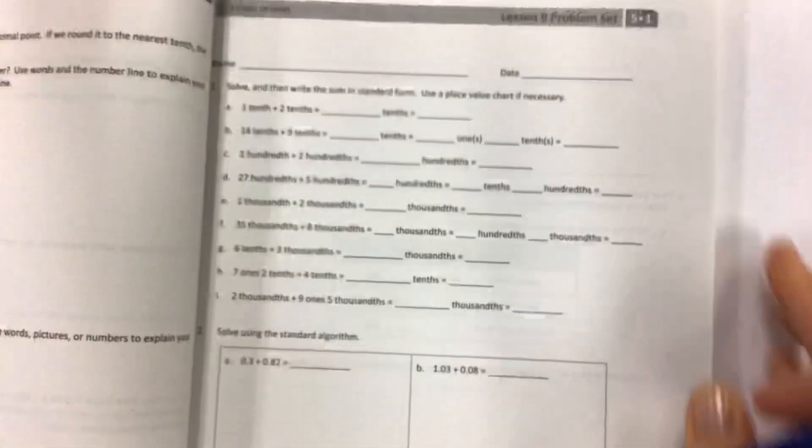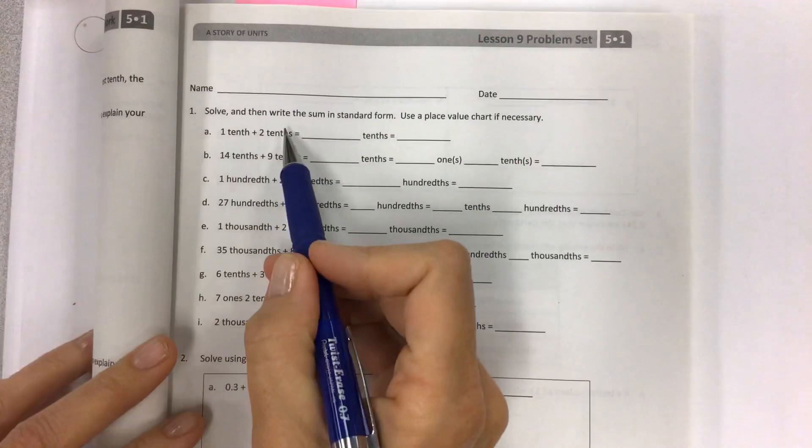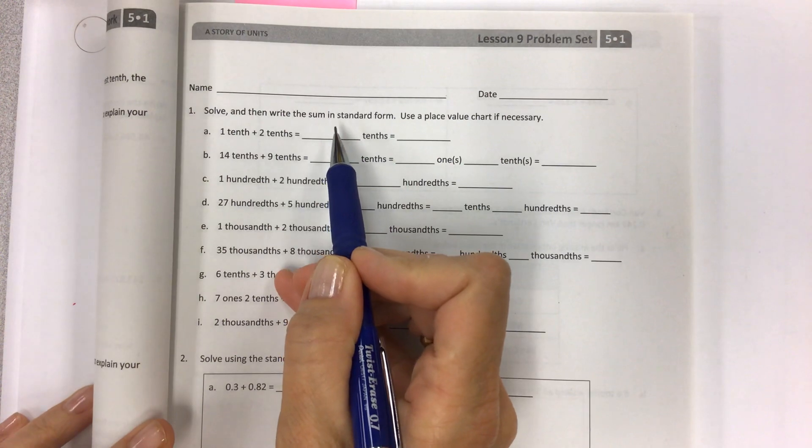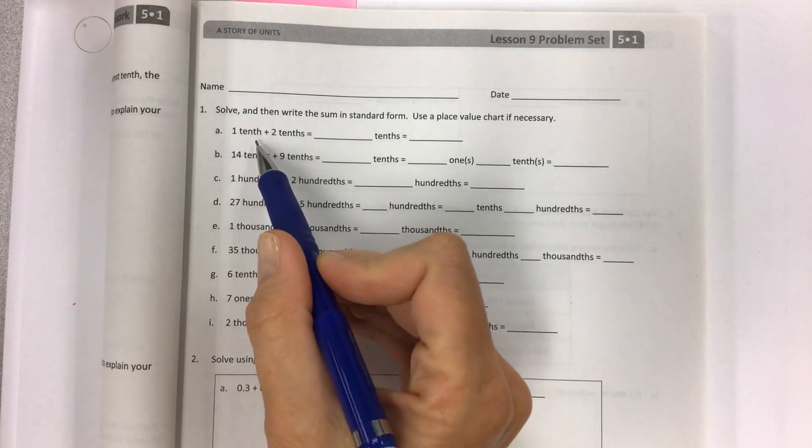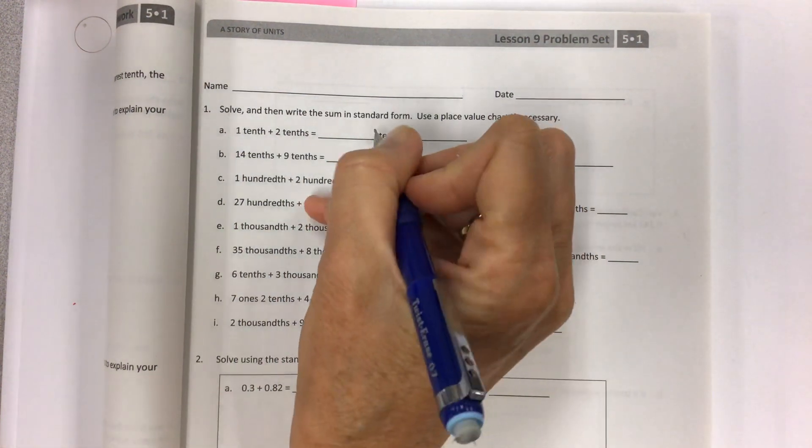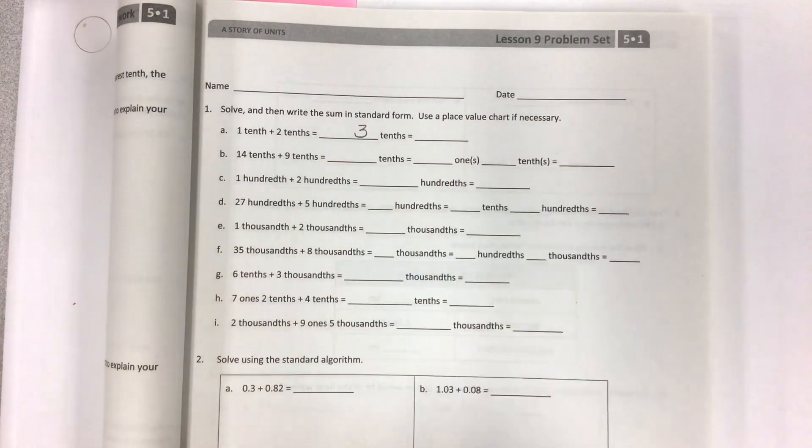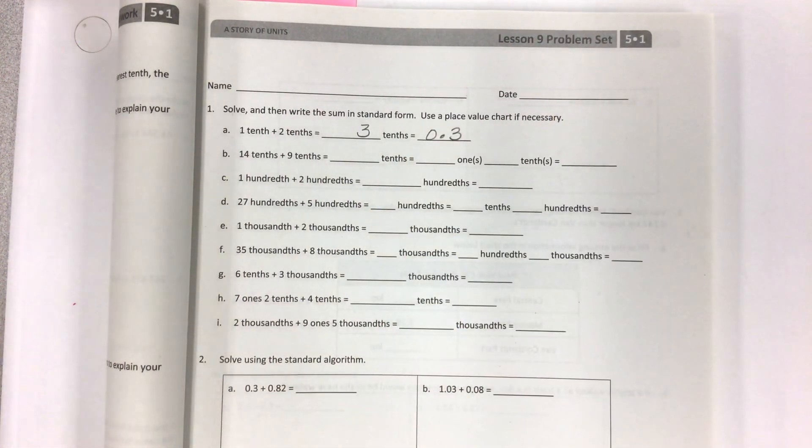In your workbook lesson 9, the directions say solve and then write this sum in standard form. Use the place value chart if necessary. First we start out with unit form: 1 tenth plus 2 tenths. Well, 1 plus 2, that's 3 tenths. Then write it in standard form, easy peasy.